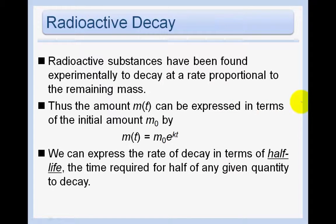Our next example talks about radioactive decay. Radioactive substances have been found experimentally to decay at a rate proportional to the remaining mass. Thus the amount m(t) can be expressed in terms of the initial amount m₀ by m(t) = m₀e^(kt). You'll see that this looks exactly like population growth. We can also express the rate of decay in terms of half-life — the time required for half of any given quantity to decay.